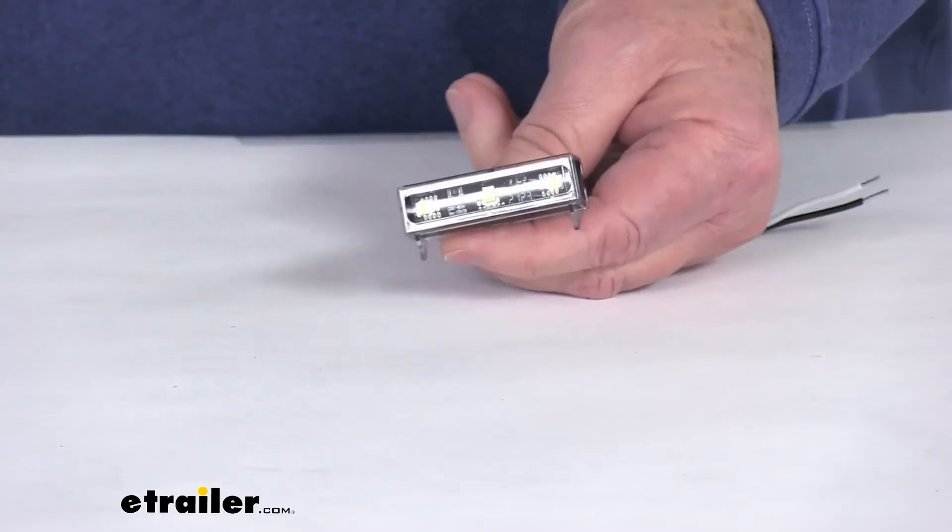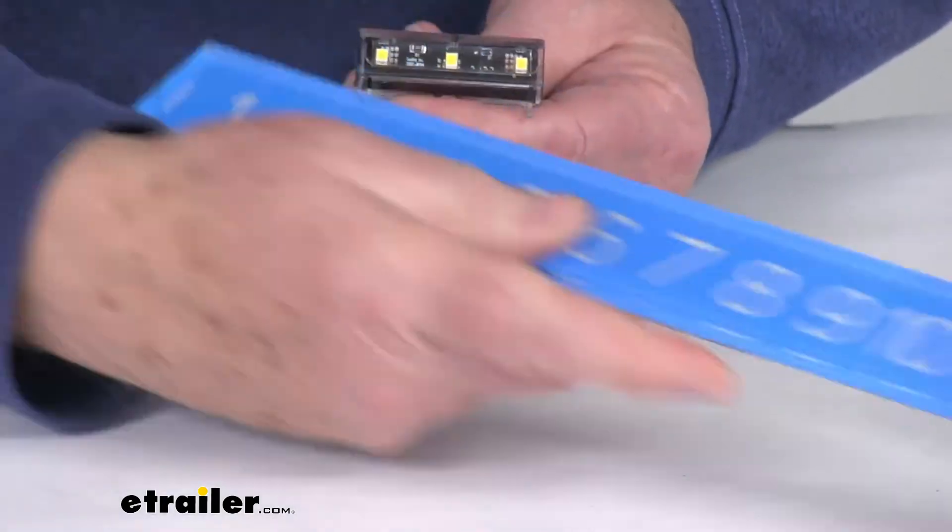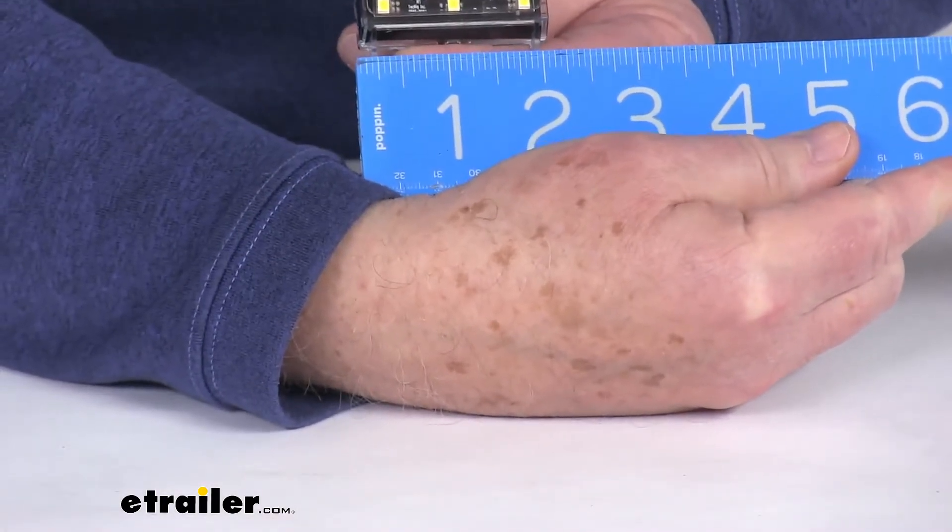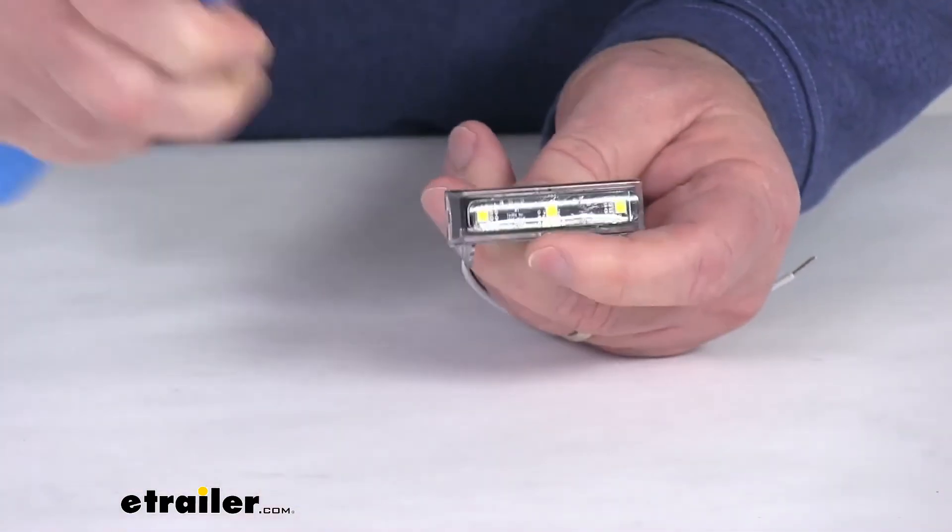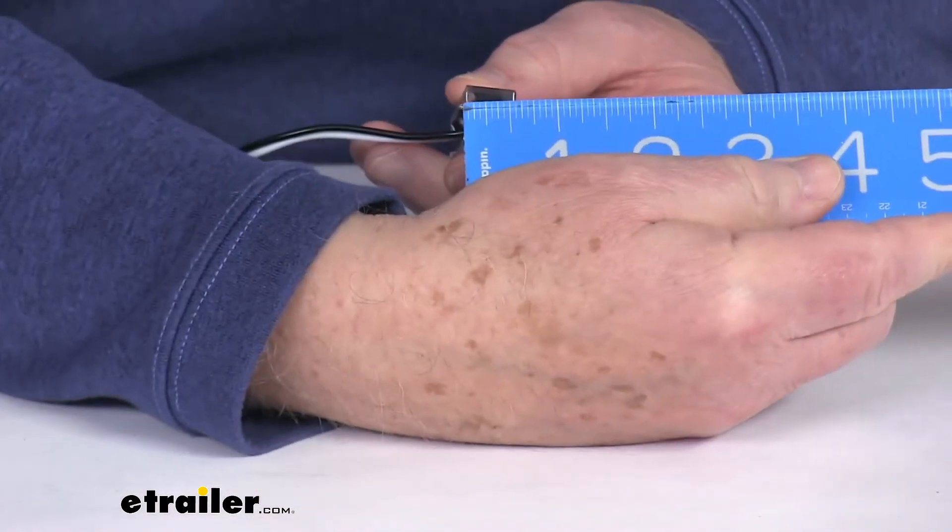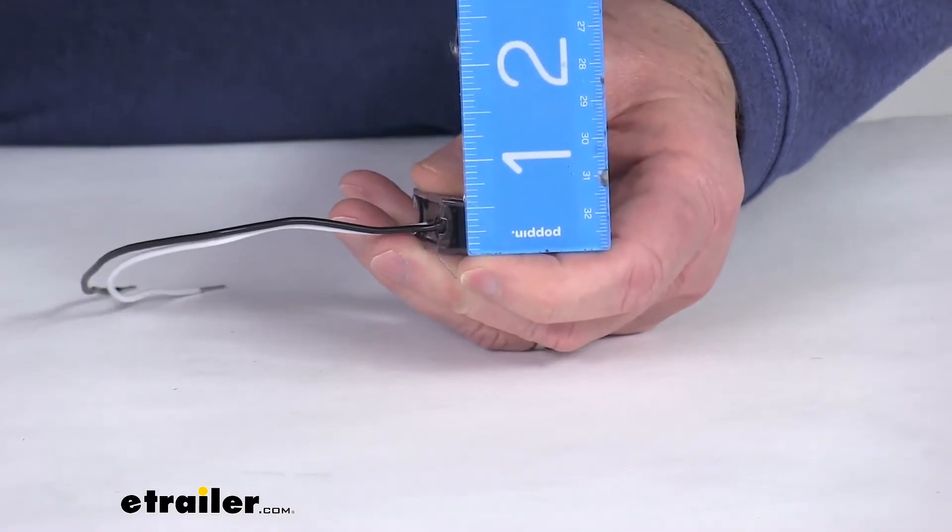Give you a few dimensions on the light itself. The length of it from one end to the other, let's go right at 2 1/8 inches. The depth of it is right at 5/8 of an inch. And the overall height is 5/8 of an inch also.